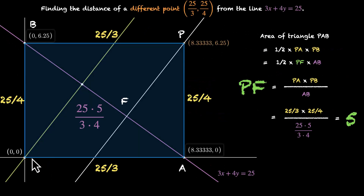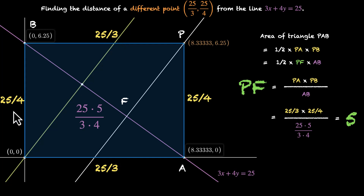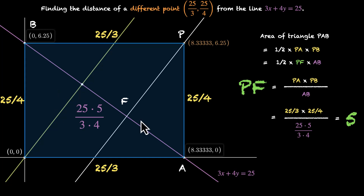We then move away from the origin and take a different point — the opposite vertex of a rectangle. The length of this rectangle is the x-intercept and the breadth is the y-intercept. This means we already know two sides of this triangle, PA and PB. We also know AB — the length between axes. Using the same triangle method, we're able to figure out PF.